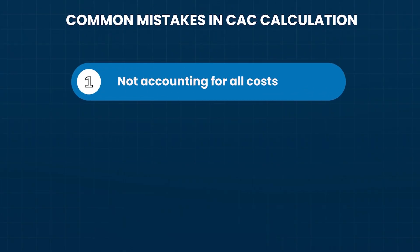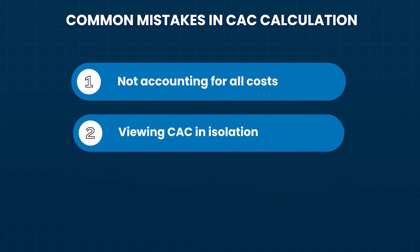Before we wrap up, let's talk about a couple of common mistakes businesses make when calculating customer acquisition costs. The first mistake is not accounting for all costs — especially indirect costs like software tools and team salaries — and just focusing on commissions or ad spend. Another common mistake is looking at CAC in isolation. CAC needs to be viewed in the context of your lifetime value. A high CAC can be justified if your LTV is significantly higher — for instance, if you're selling enterprise SaaS software, you can have a much higher CAC because your LTV is presumably much higher. Conversely, with high-volume transactions and low or no recurring revenue, you've got to keep that CAC as low as possible.